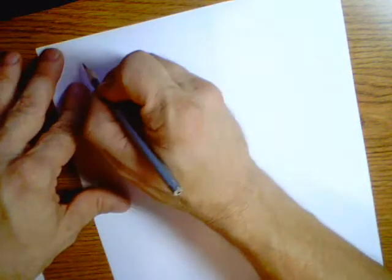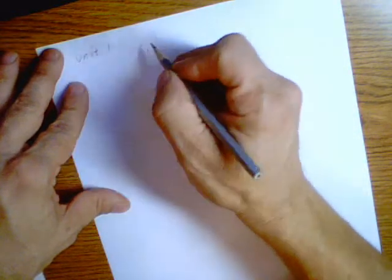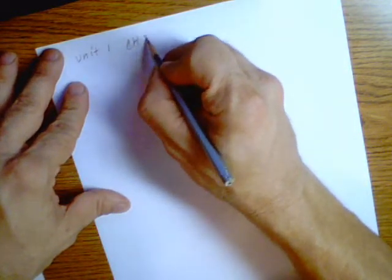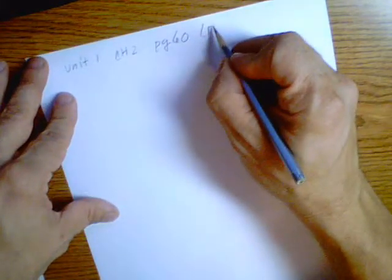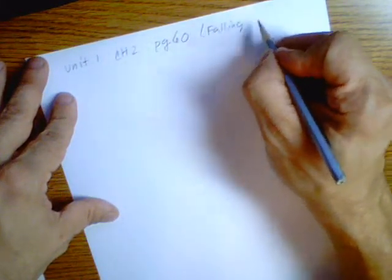Hey physics students, Mr. Rezentis here. I'm on page 60, falling objects. This is unit 1, chapter 2, page 60, and we're talking about falling objects.